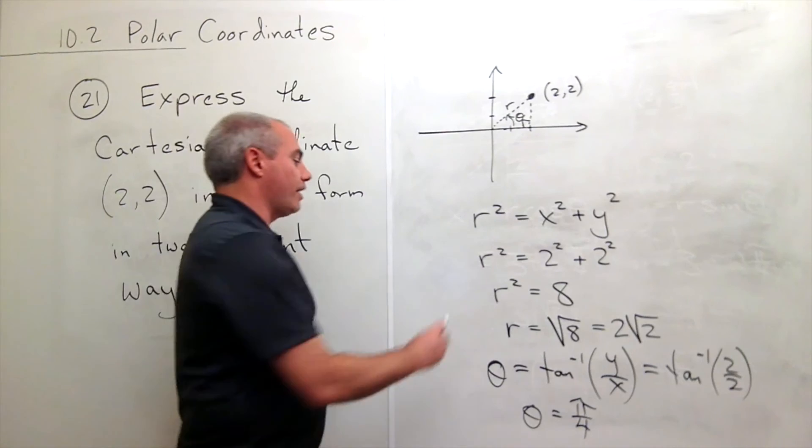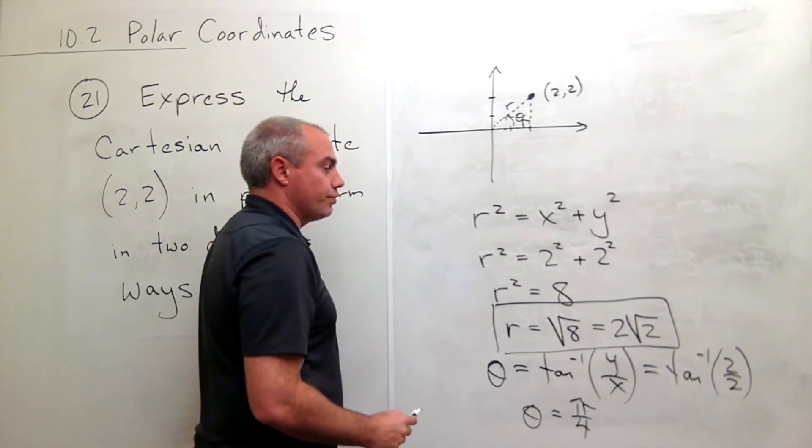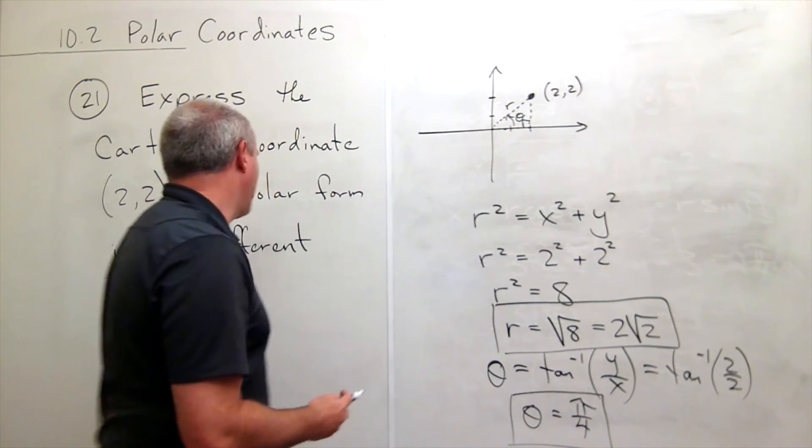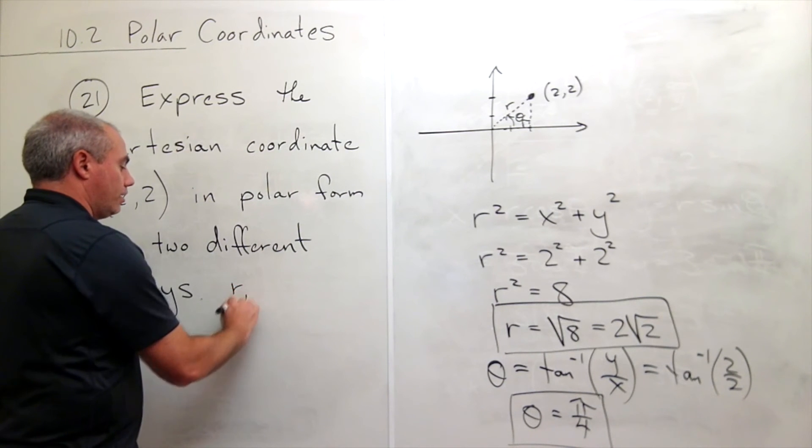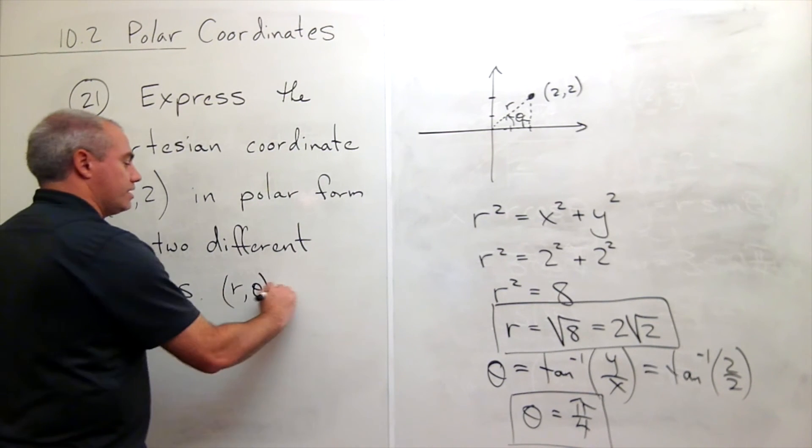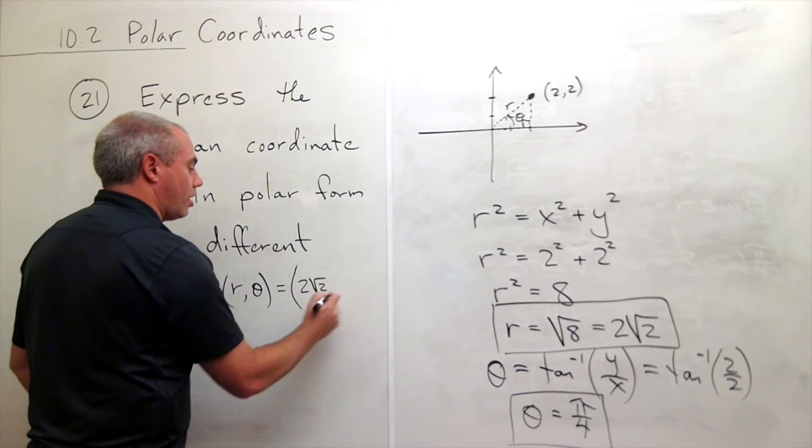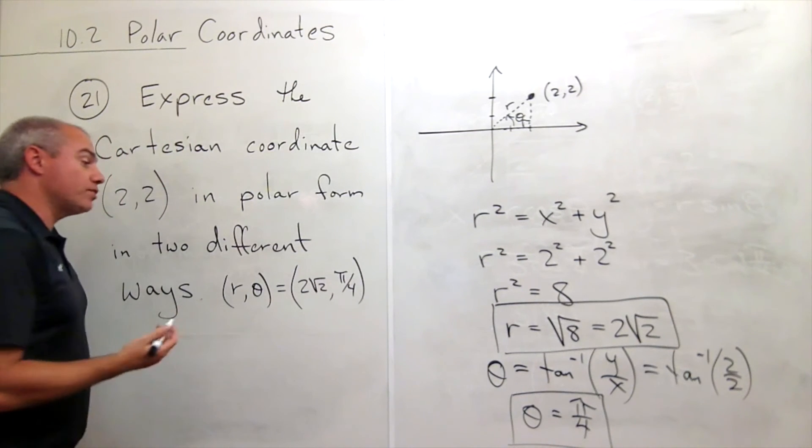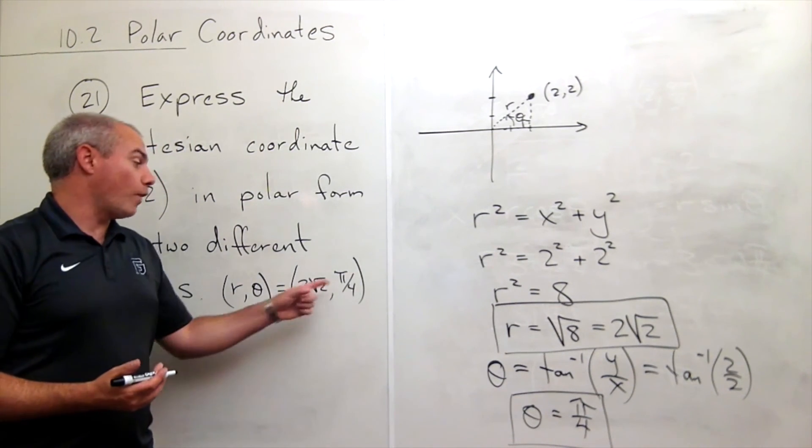All right, so I've got that r is 2√2 and I've got that theta is π/4. So if I wanted to write this one way, I get that (r, θ) is equal to (2√2, π/4). Okay, that's one way that I could represent it. There are lots of ways.